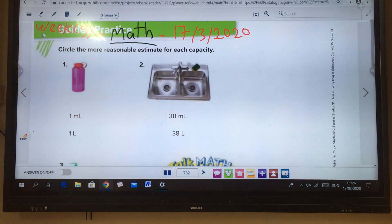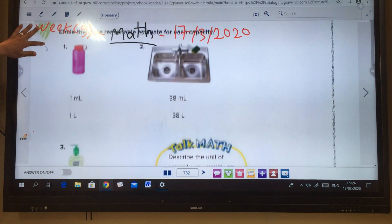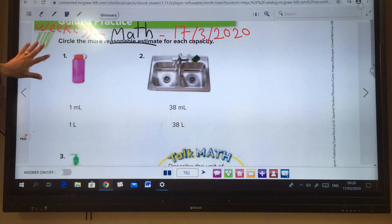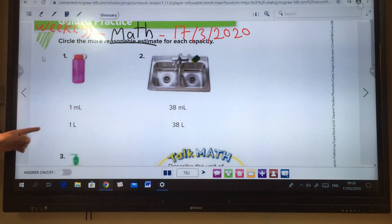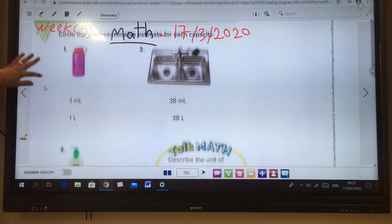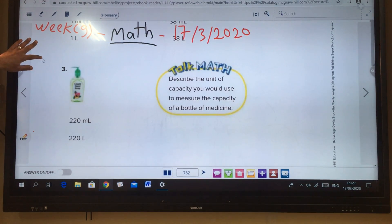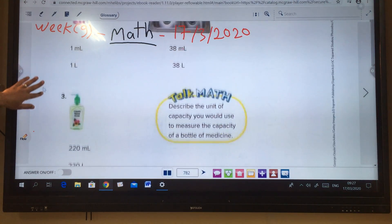Circle the best estimate for each of these. Number one, two and three. Number one, this potter: its capacity one milliliter or one liter? Number two: 38 milliliter or 38 liter? Number three: 220 milliliter or 220 liter?